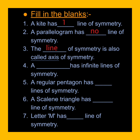Number four: a blank has infinite lines of symmetry — a circle has infinite lines of symmetry. Fifth one: a regular pentagon has blank lines of symmetry — a regular pentagon has five lines of symmetry. Sixth one: a scalene triangle has blank lines of symmetry — a scalene triangle has no lines of symmetry. Number seven: letter M has blank line of symmetry — letter M has one vertical line of symmetry.